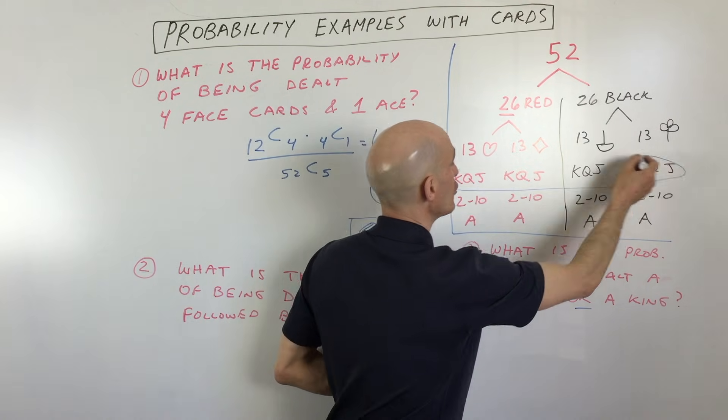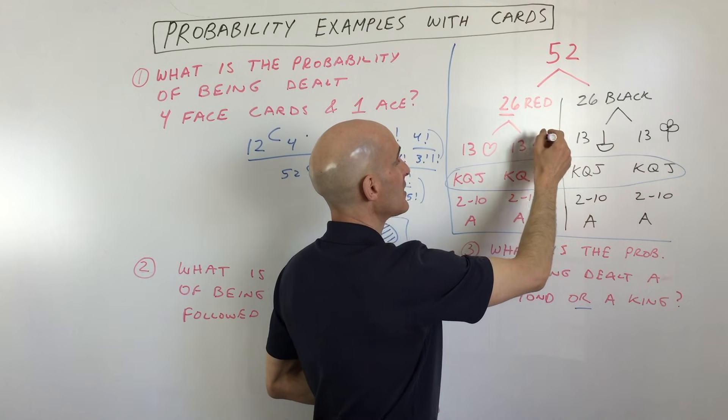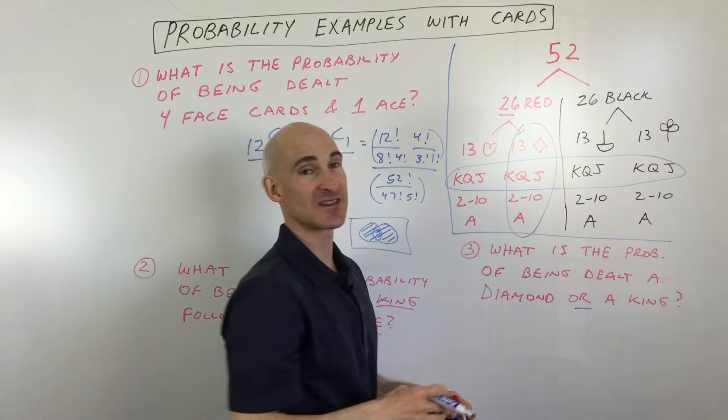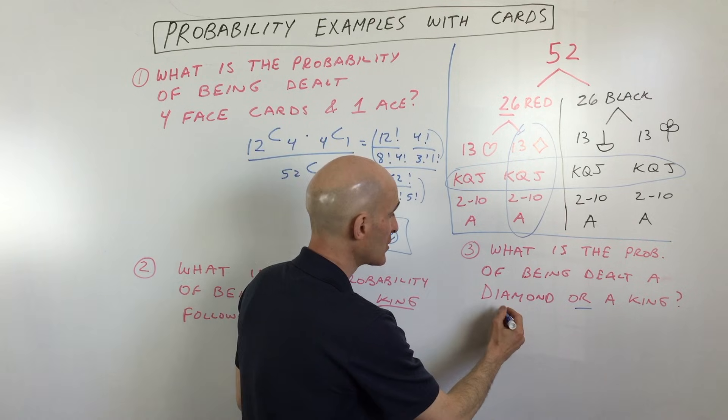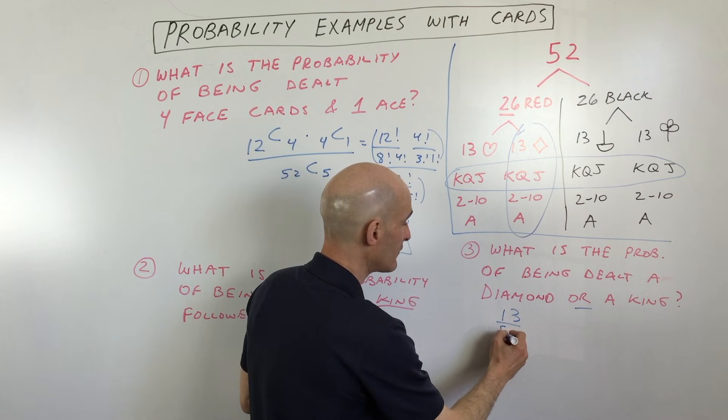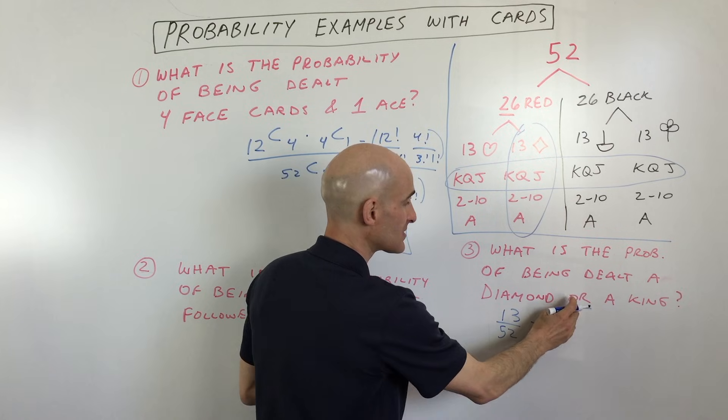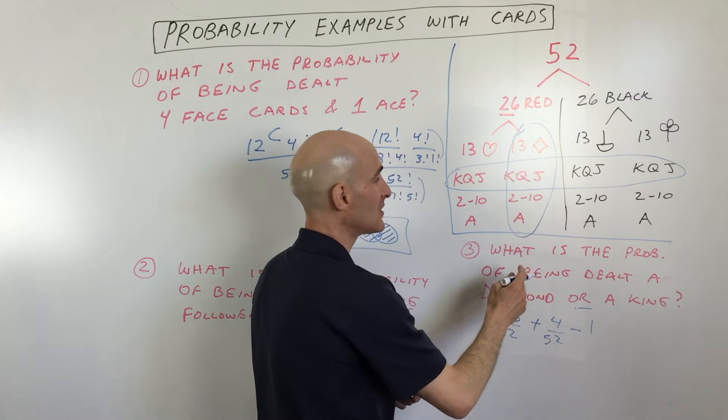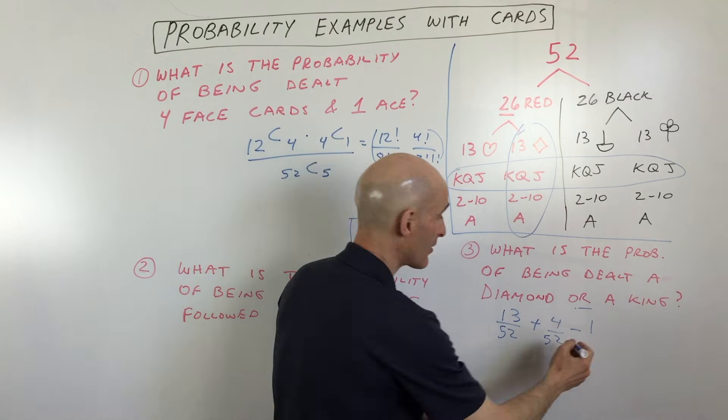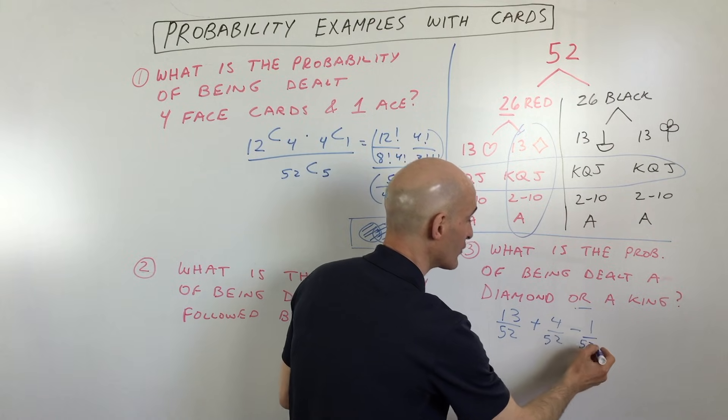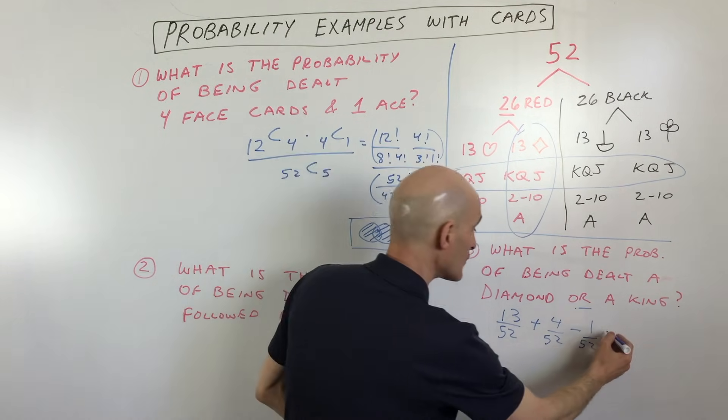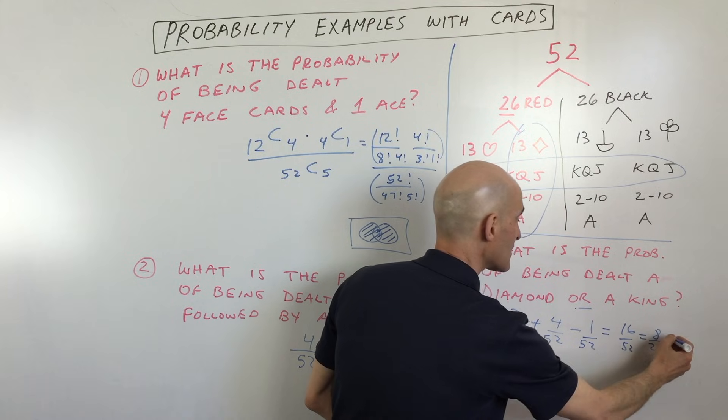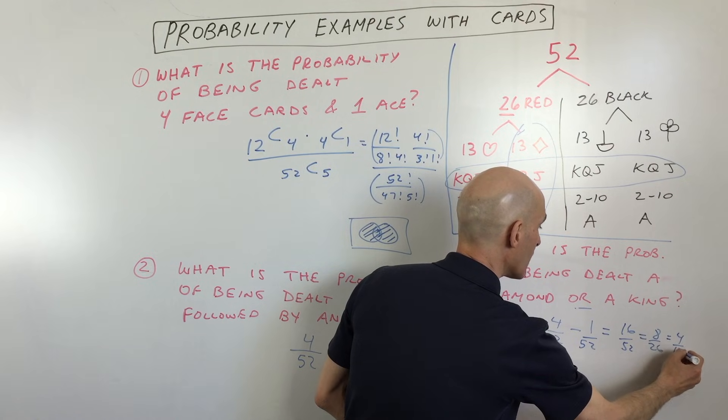So if I could just kind of circle this here to show you, like, here's the kings, one, two, three, four kings. Here's the diamonds, like everything that's kind of in this group, and you've got that king of diamonds that's in both groups. So you don't want to double count it. So what we're going to do is we're going to say the probability of being dealt a king, which is four out of 52, minus the probability that you're dealt the king of diamonds, because we counted that one twice. So we're going to subtract the probability of being dealt the king of diamonds. So if we simplify, we get 16 out of 52, and you can reduce that further, 8 out of 26, or 4 out of 13.